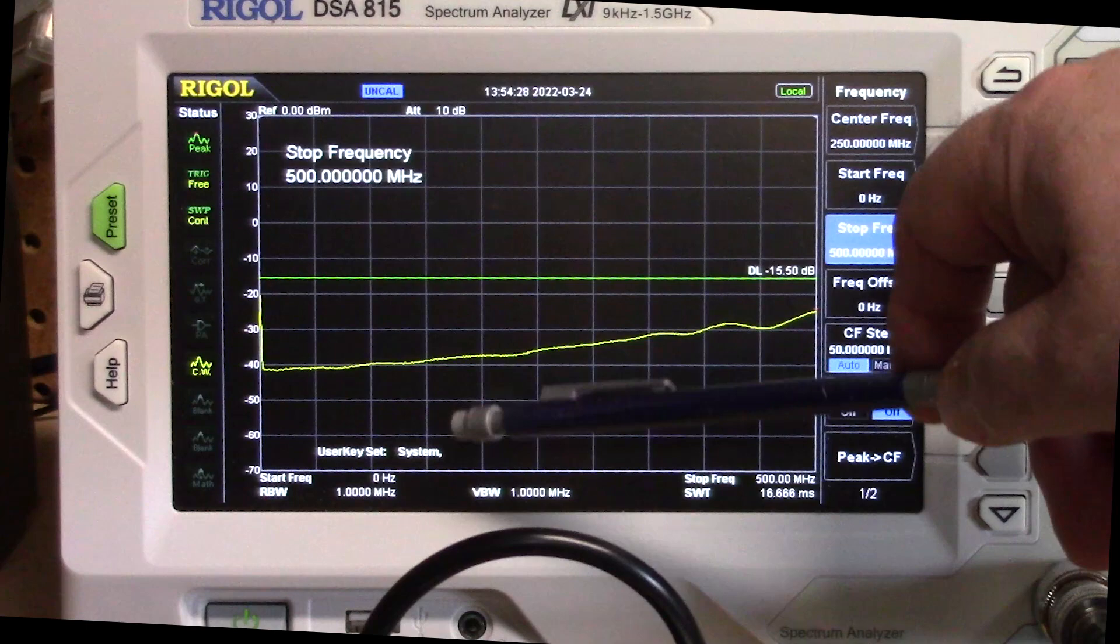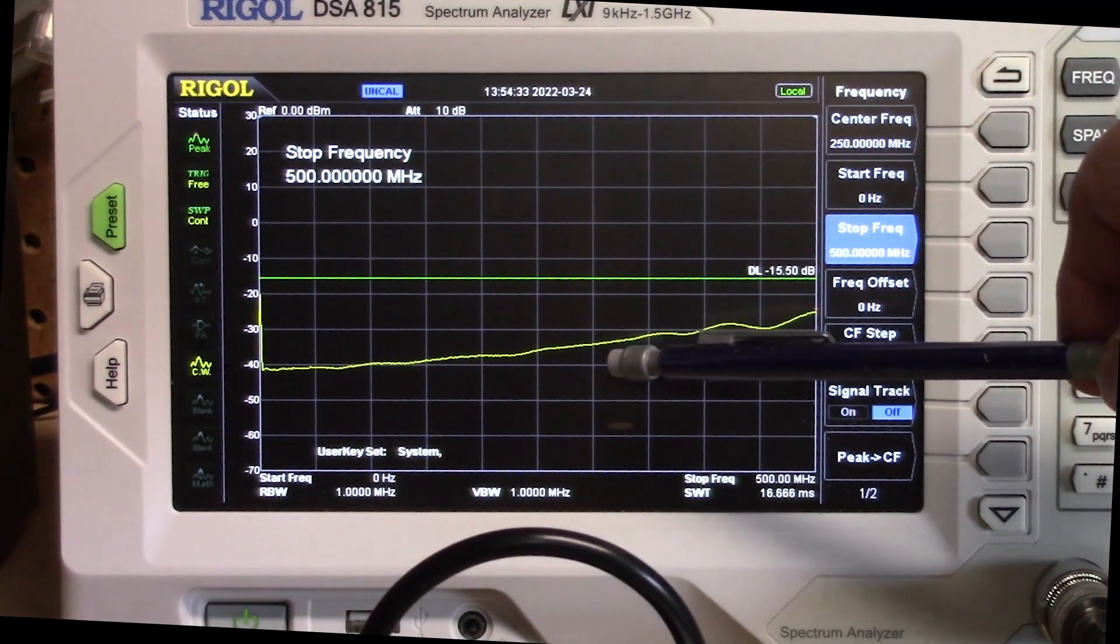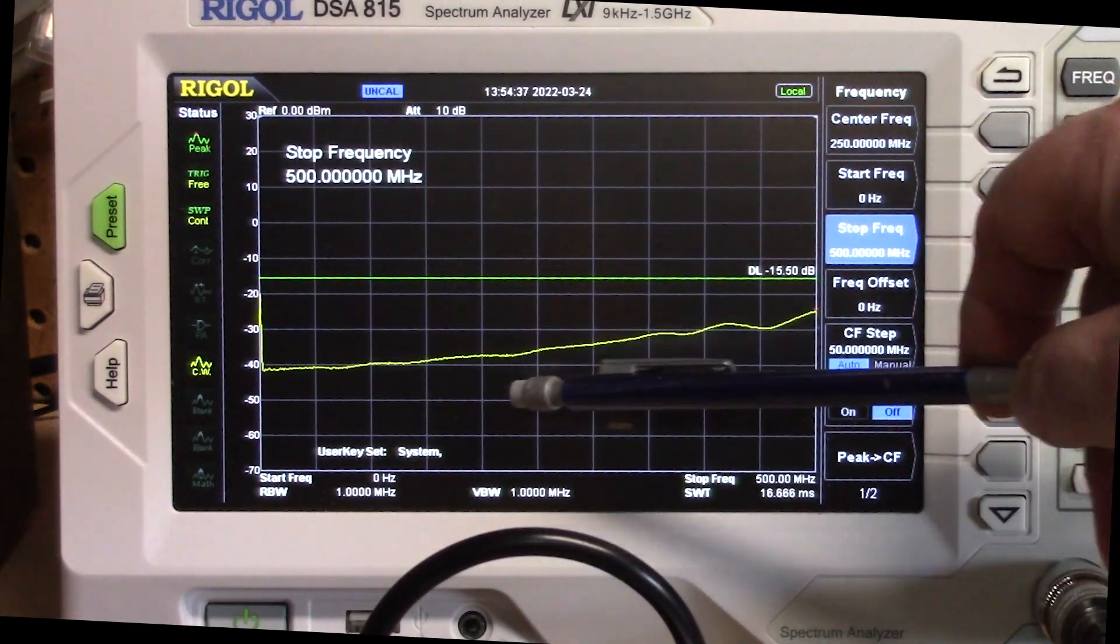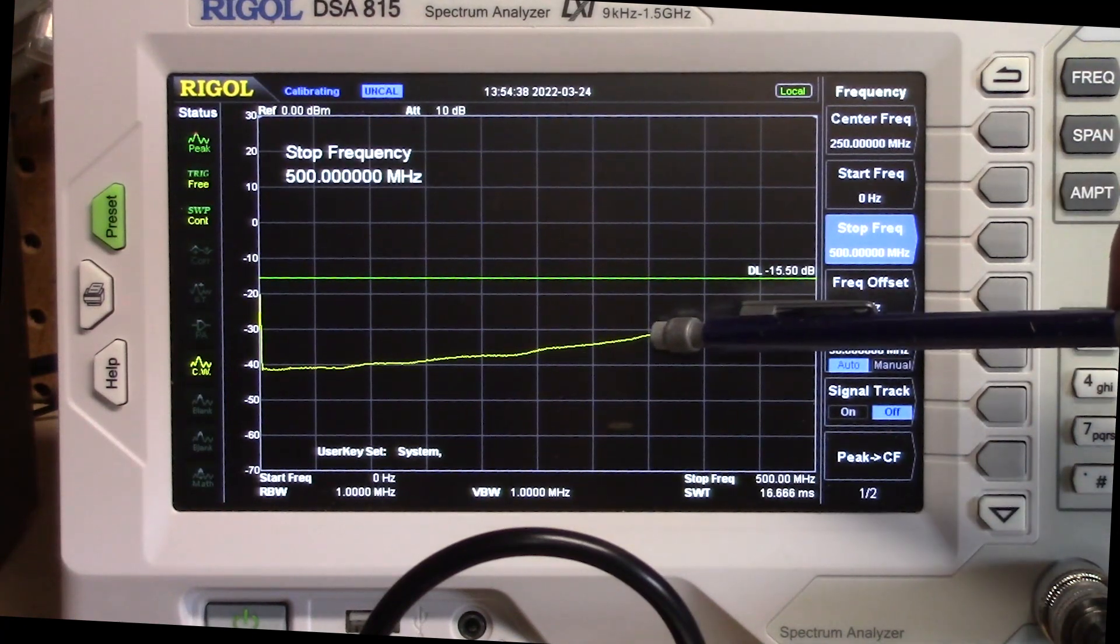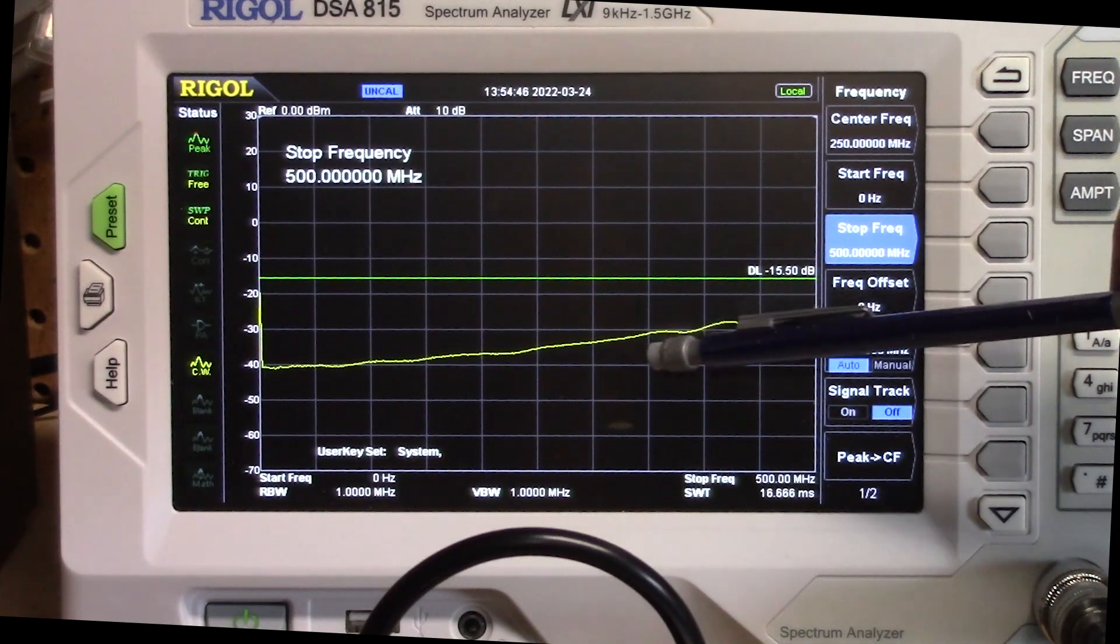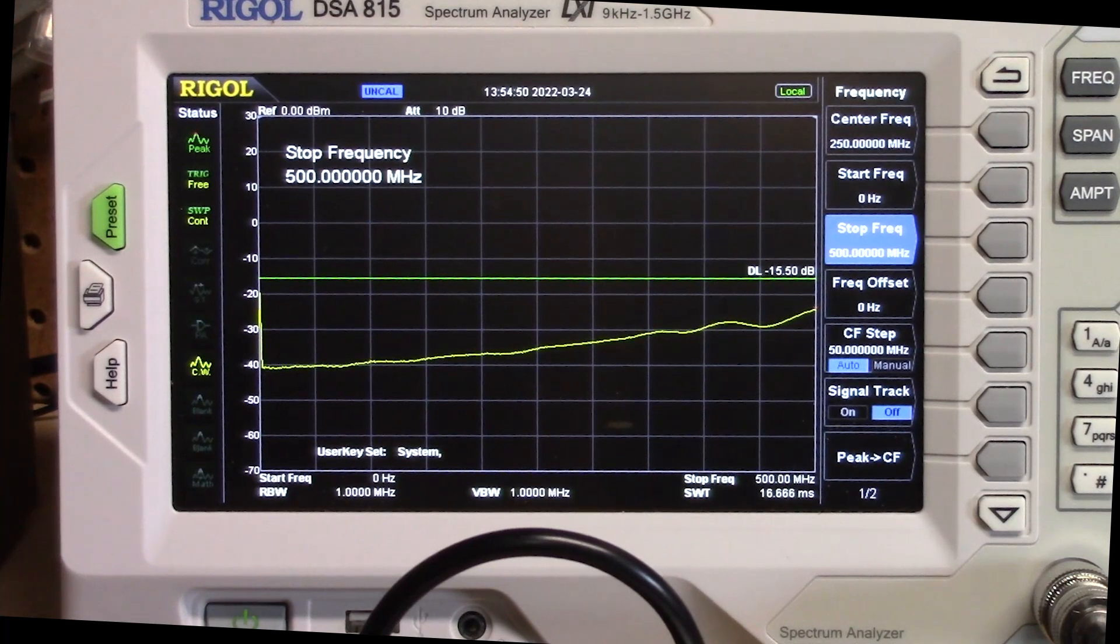So you can see right around 150 megahertz. It starts easing up. And by the time we get to, let's see, 100, 200, 300, 350. By the time we get to about 350, we're at minus 30 dB. So not so great for UHF range, really.